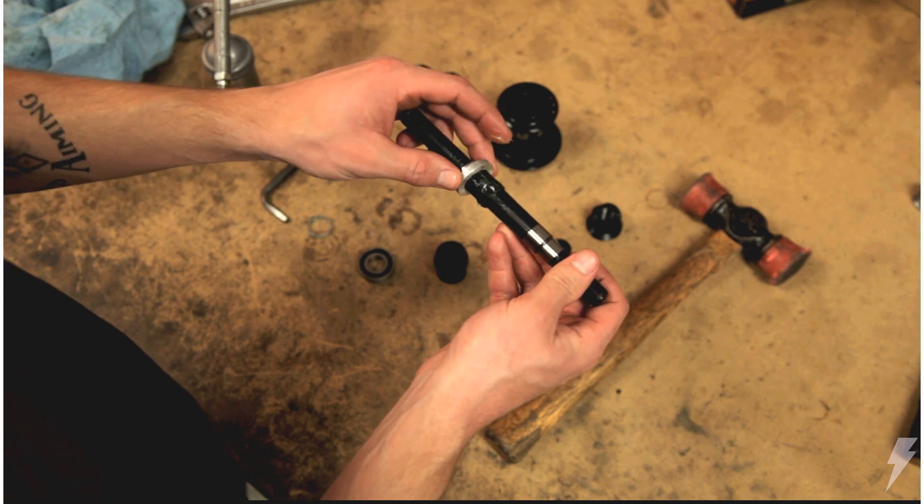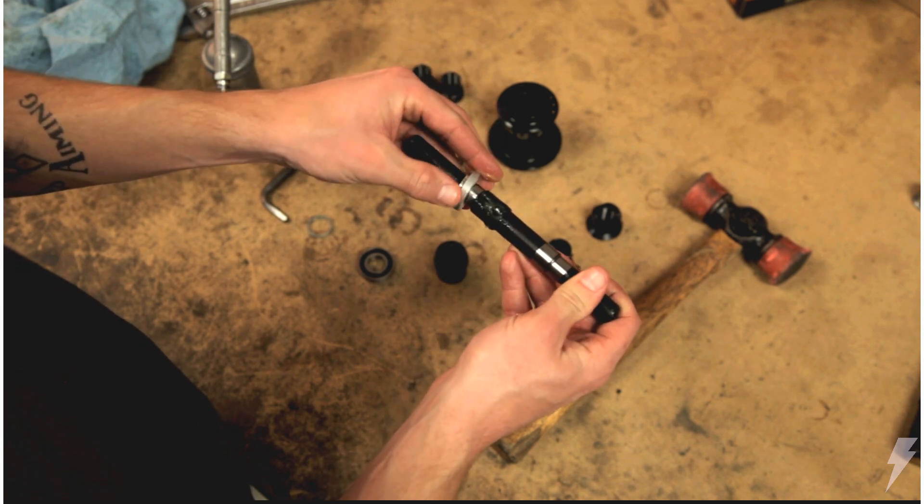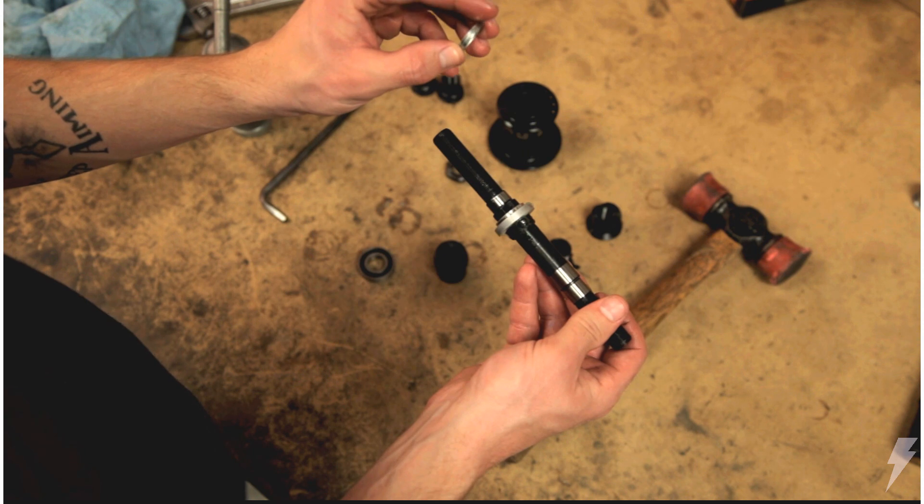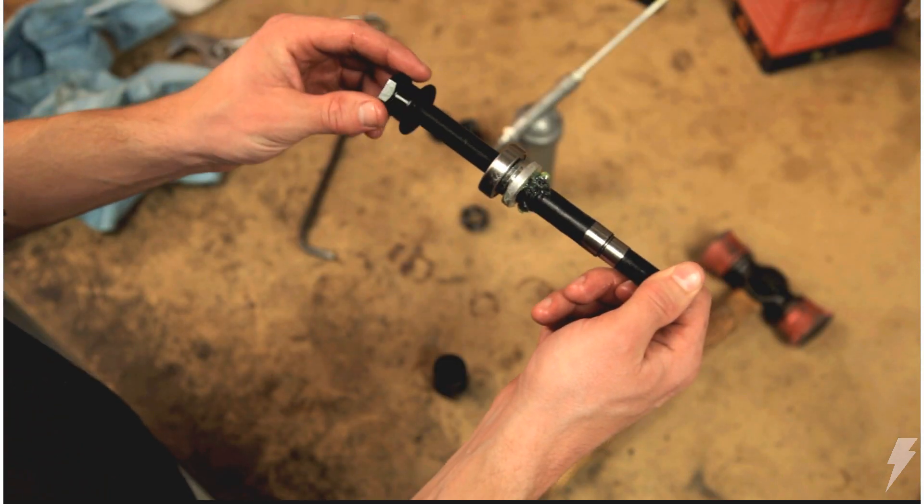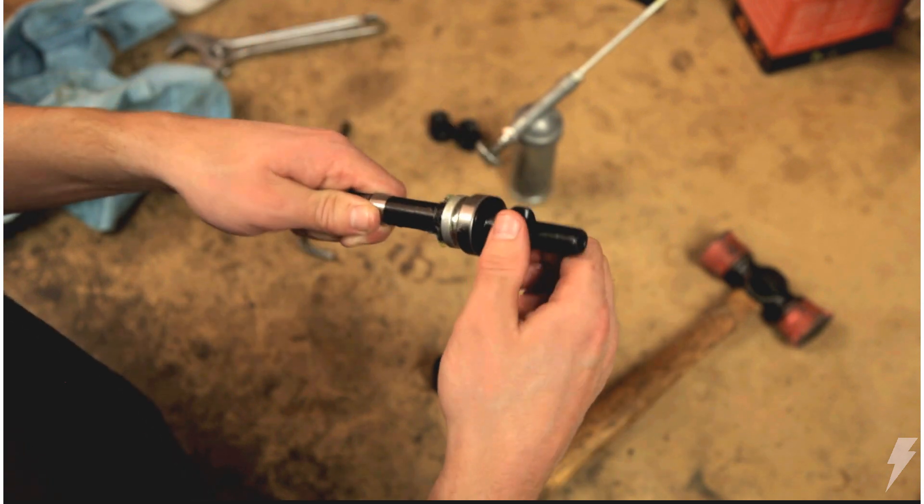Now install the hat spacer, making sure to add grease to the axle where the spacer rides. Next comes your slack washers, the non-drive side hub shell bearing, and the cone nut. Make sure the cone nut is snugged up tight.